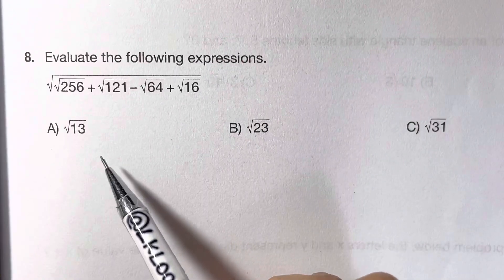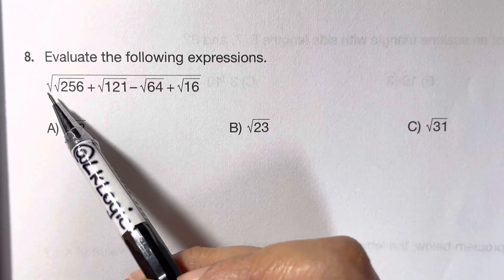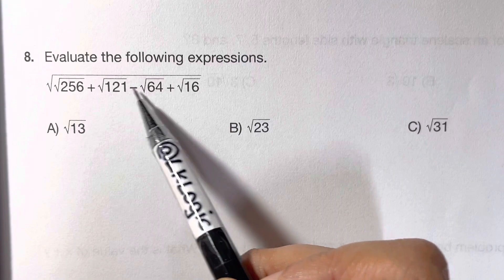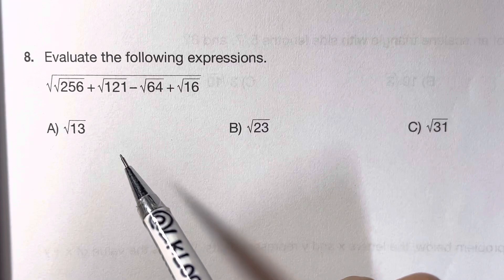Hi everyone, in this Math Olympiad question we're going to evaluate the following expression: square root of square root of 256 plus root of 121 minus root of 64 plus root of 16. So how should we solve this?